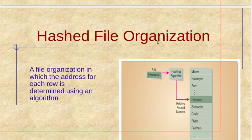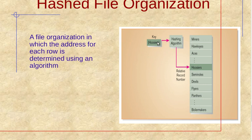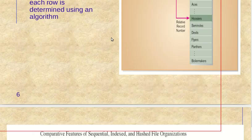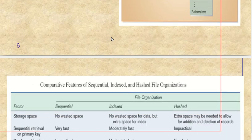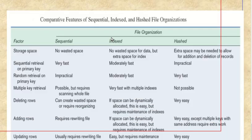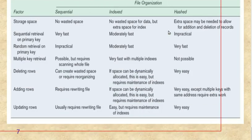Our next file organization method is hash file organization. In hash file organization, files are organized on the basis of a hashing algorithm. Using the hashing algorithm we can find the file location — it is a very easy method. Here is a comparison table you can observe.